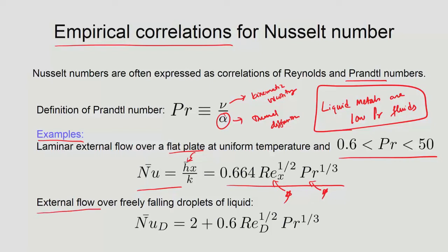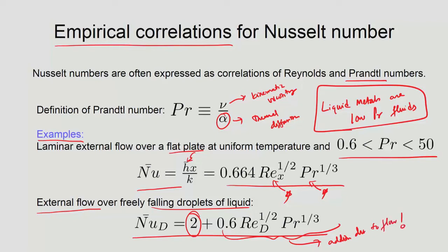For external flow over a freely falling liquid droplet, the correlation is Nu equals 2 plus additional terms in Re and Pr. We now understand the 2 comes from pure conduction (the sphere result), while the additional terms account for convective enhancement. Substituting processing conditions or fluid properties gives Nu, from which h follows for use as a boundary condition in thermal problems.